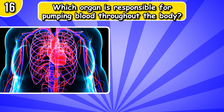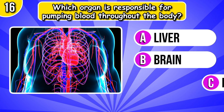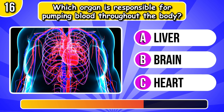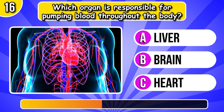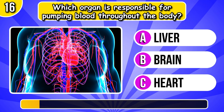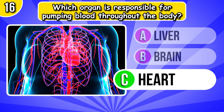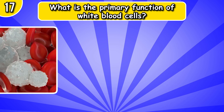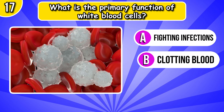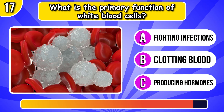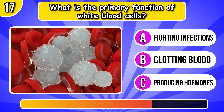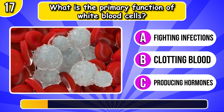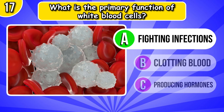Which organ is responsible for pumping blood throughout the body? It's heart. What is the primary function of white blood cells? It's fighting infections.